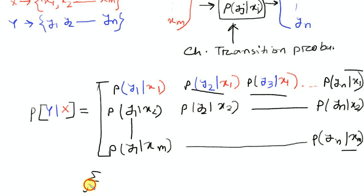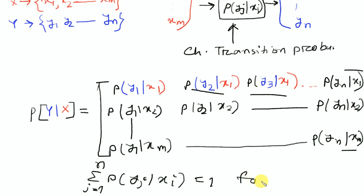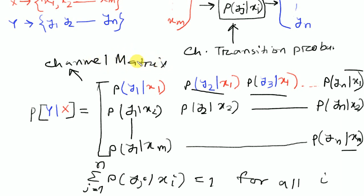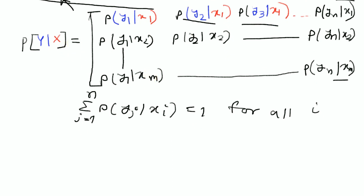The sum from j=1 to n of P(yj | xi) is equal to 1, for all i. This is our channel matrix. Given this channel matrix and our input symbol probabilities, we will find out the output symbol probabilities. We will see a 2x2 matrix example to make this clear.